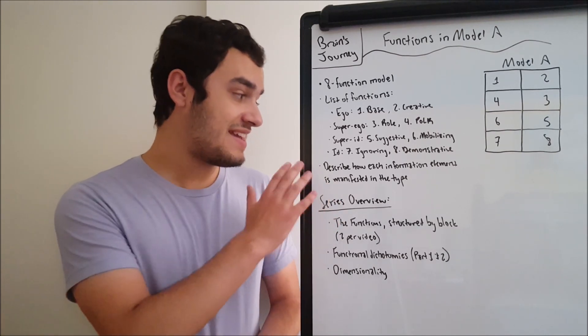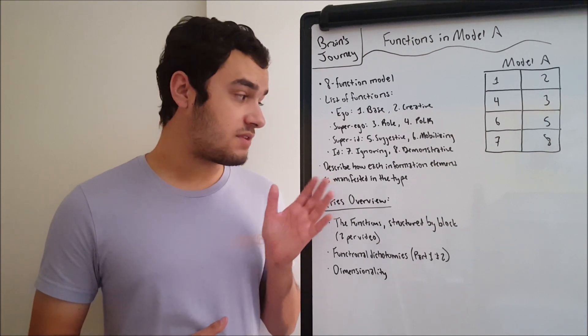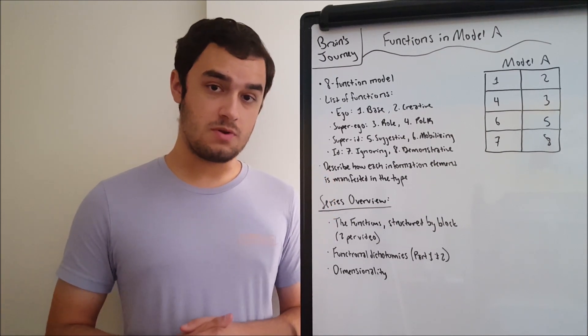And then the last block is the id block, which has the seventh function, the ignoring, and the eighth function, the demonstrative.